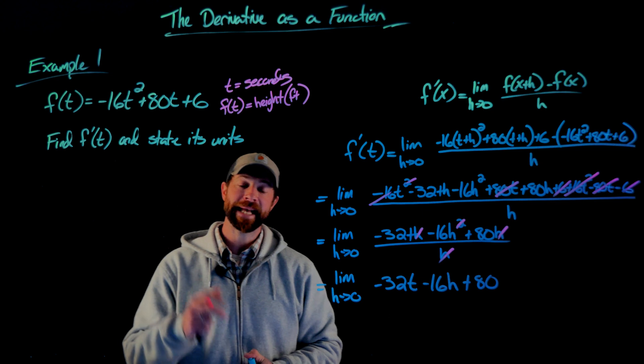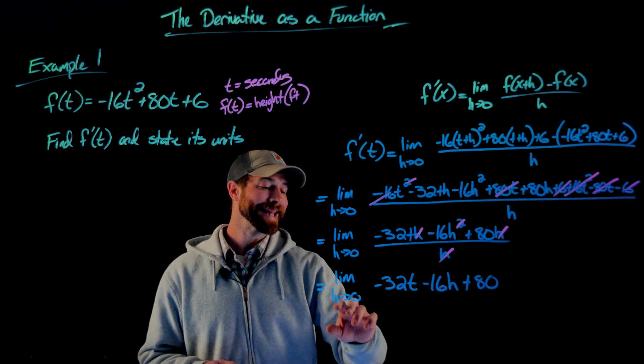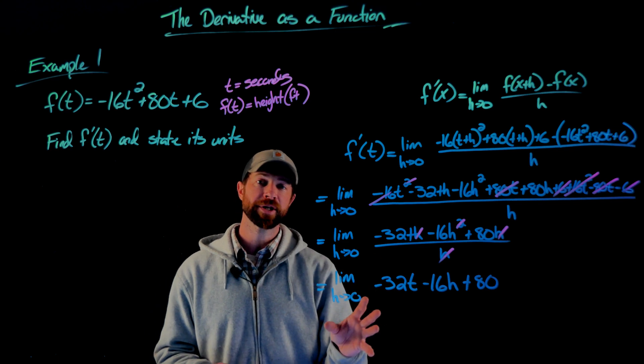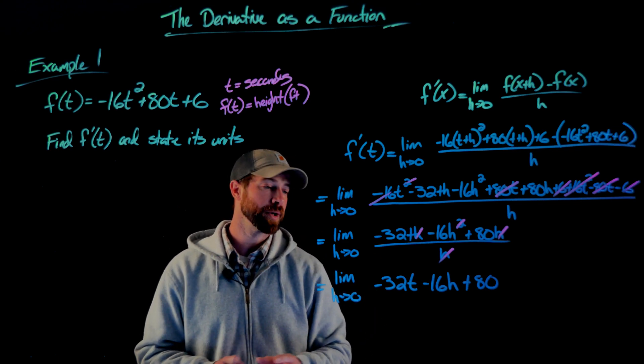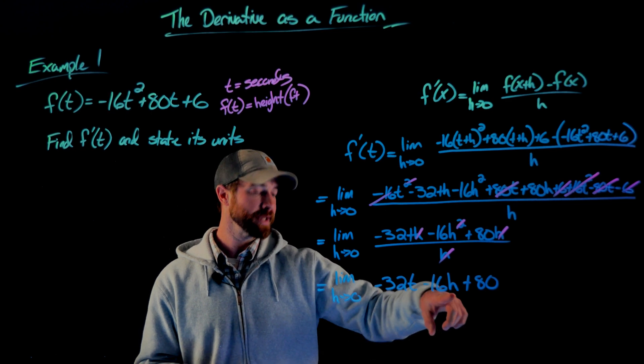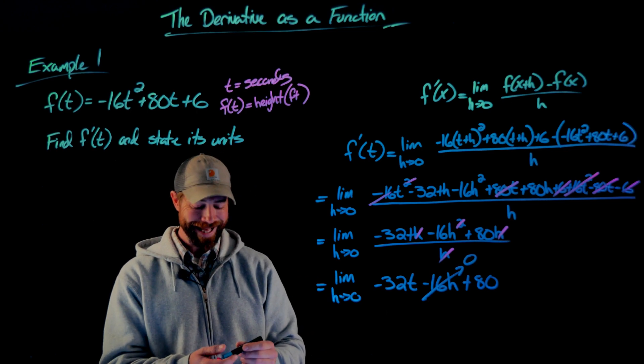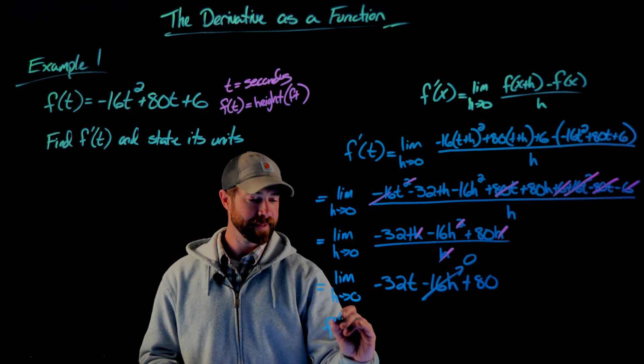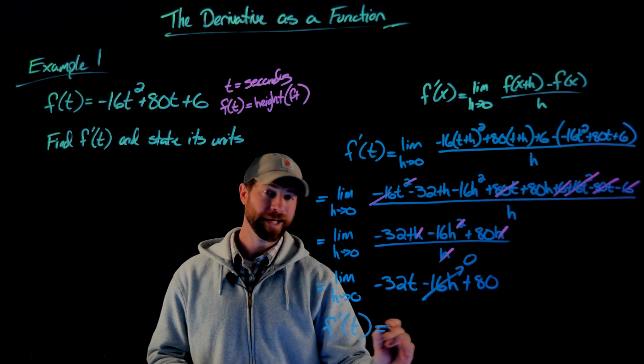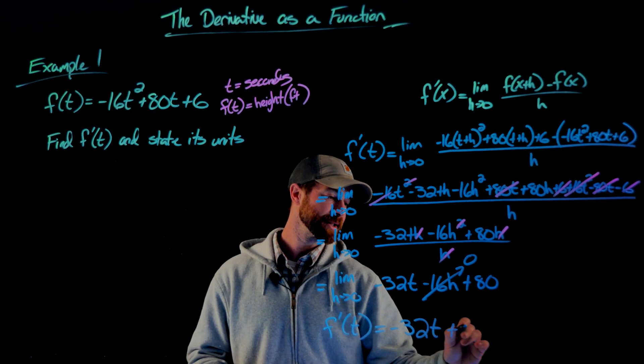Finally, now I can actually apply this limit to this expression right here. I can let h go to zero because there's no issues with dividing by zero. And when I do that, as h goes to zero, I plug in a zero for this term right here. And this term then becomes zero, giving me that f prime of t equals negative 32t plus 80.